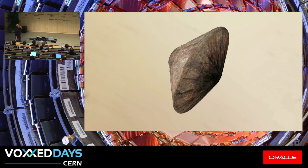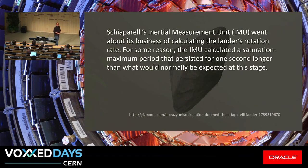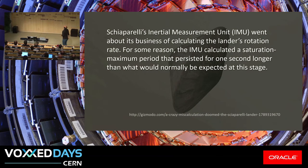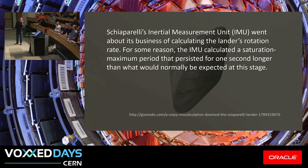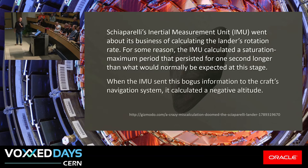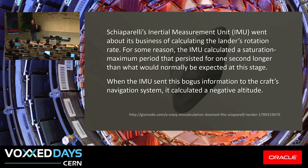This is the Schiaparelli lander. It was supposed to land — well, it did land on Mars's surface, October 2016. The internal measurement unit went about its business of calculating the lander's rotation rate. The IMU calculated a saturation maximum that persisted for one second longer than expected. When the IMU sent this information to the craft's navigation system, it calculated a negative altitude. In other words, the probe thinks it's underground.